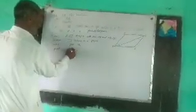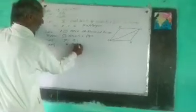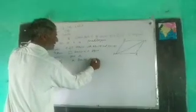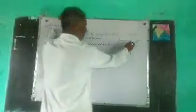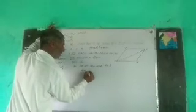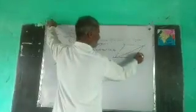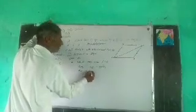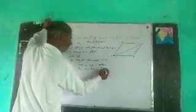We take two triangles: triangle ABC and triangle ACD. In these two triangles, we can see that side AB is equal to side CD — it is given. Also, side BC is equal to side AD — it is also given. Now, in these two triangles, one side is common, that is AC. So AC is equal to AC.